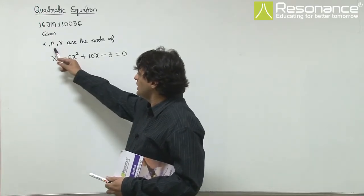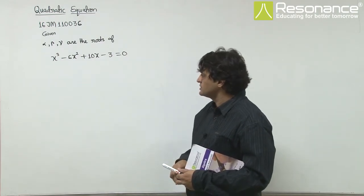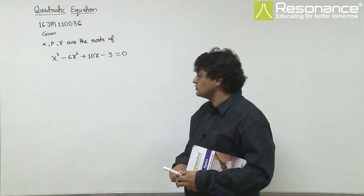In this question, we are given that alpha, beta, gamma are the roots of this cubic equation x³ - 6x² + tan x - 3 = 0.